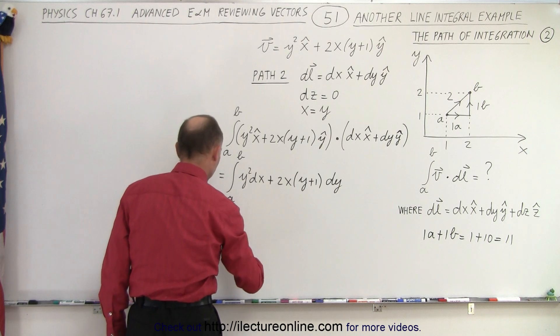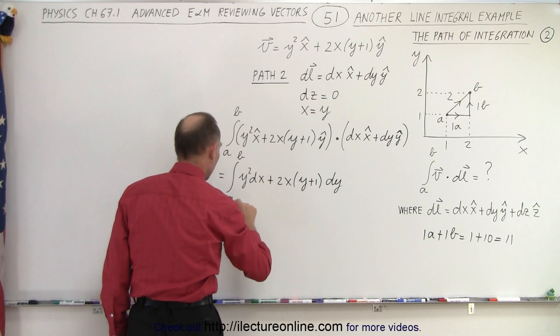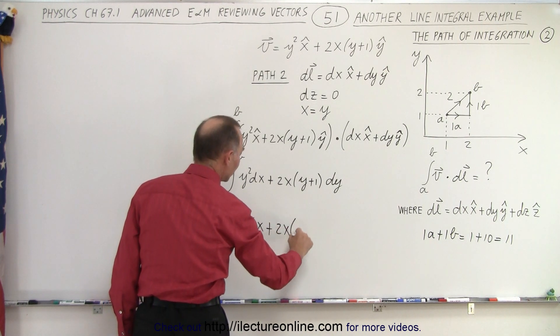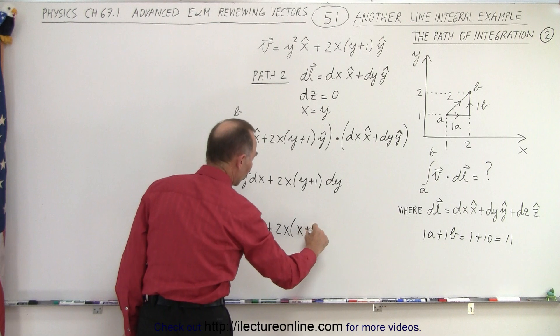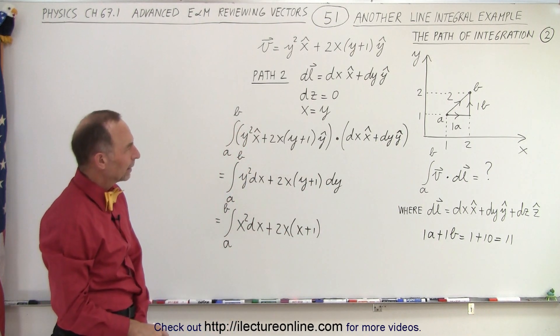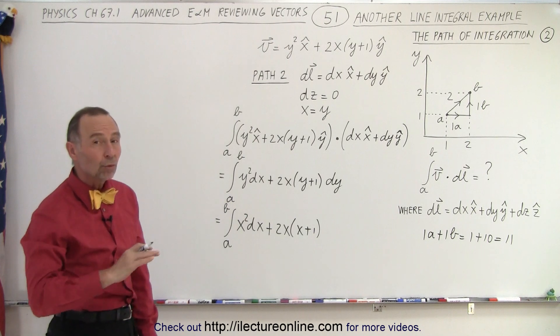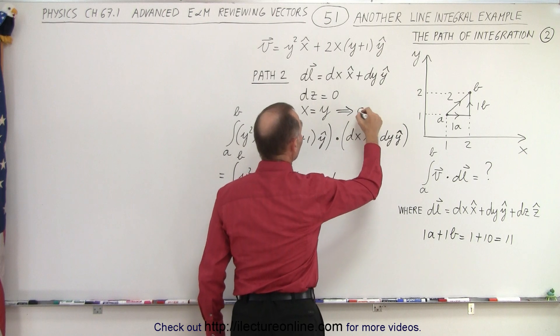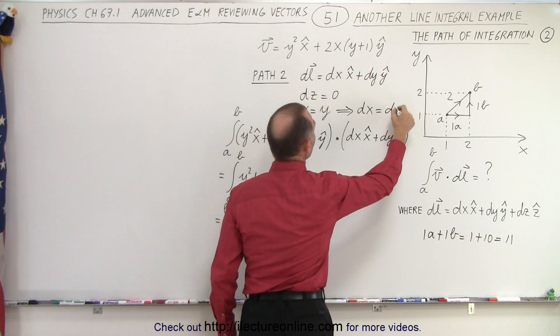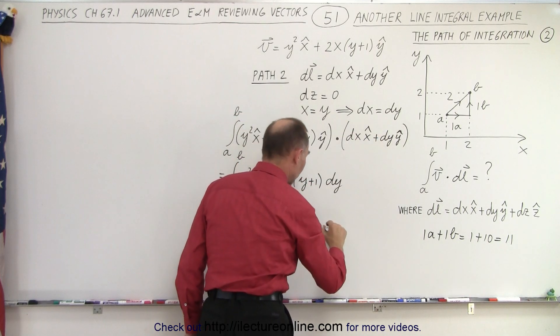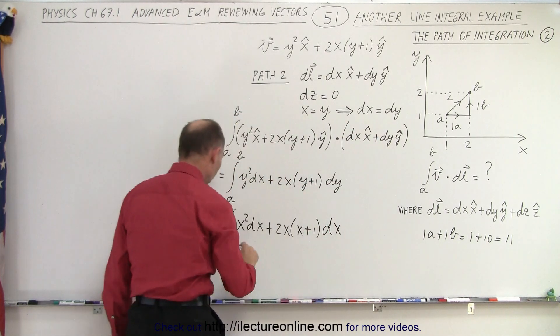So this is equal to the integral from A to B. y squared can now be written as x squared times dx plus 2x times, instead of y, we can write x plus 1. But now we still have a dy there. Now notice if x equals y, then the derivative of both sides, this then implies that if we take the derivative of both sides, that dx will equal dy. And so we can then take dy and replace it by dx.